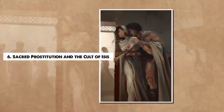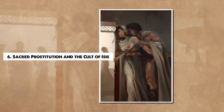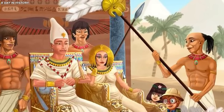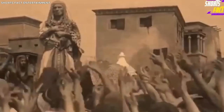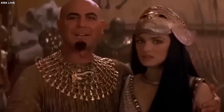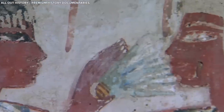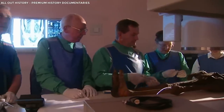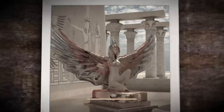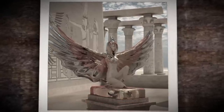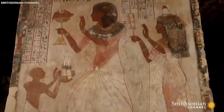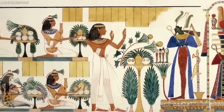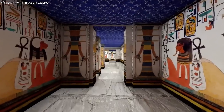Number 6: Sacred Prostitution and the Cult of Isis. Sacred prostitution, a highly debated topic among scholars, is thought to have been part of certain religious rituals in ancient Egypt. It involved priestesses, often serving in temples dedicated to goddesses like Isis, engaging in sexual intercourse as an act of worship. However, the concept might be misrepresented due to the misconceptions of early historians and archaeologists. The Cult of Isis, one of the most prominent religious movements in ancient Egypt, has been associated with this practice. Isis, goddess of magic, fertility, and motherhood, was worshipped for her ability to heal and protect, and her temples were places of sanctuary, healing, and enlightenment.